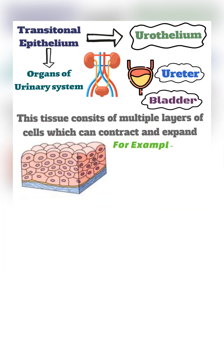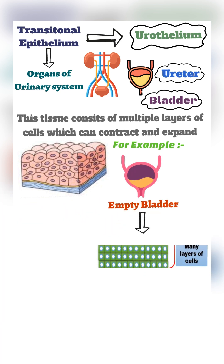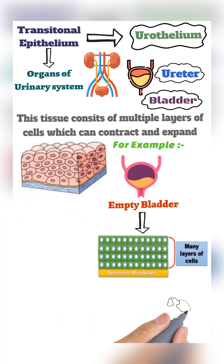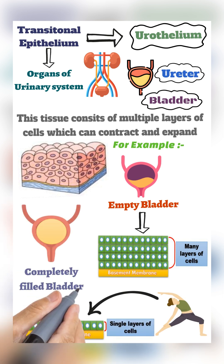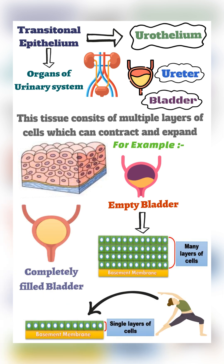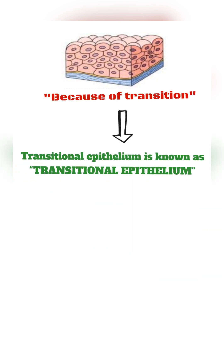For example, in the bladder — when the bladder is empty, it has many layers of cells overlapping each other. It can stretch out to a single layer of cells when the bladder is completely filled. This epithelium undergoes such transition, which is why it is known as transitional epithelium.